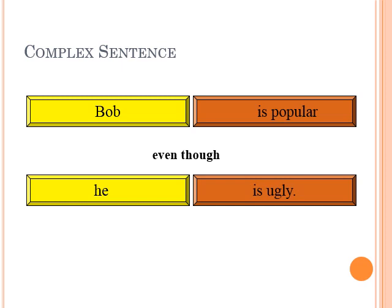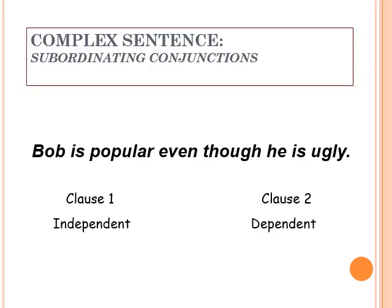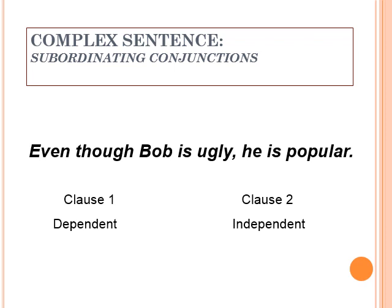The third type is a complex sentence. For example: 'Bob is popular even though he is ugly.' Here 'Bob is popular' is the independent clause and 'he is ugly' is the dependent clause, linked with the subordinating conjunction 'even though.' The dependent clause can also come first: 'Even though Bob is ugly, he is popular.' There will always be a subordinating conjunction joining an independent clause and a dependent clause.